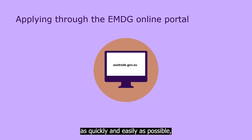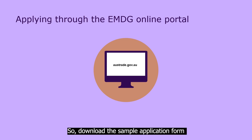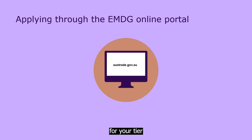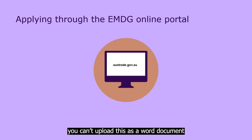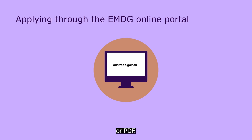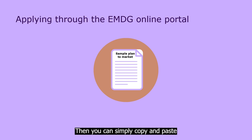To get through your application as quickly and easily as possible, we recommend you prepare your answers in advance. Then you'll be ready to submit when applications open. Download the sample application form for your tier from the Austrade website and answer all the questions. If you've been asked to produce a high-quality plan to market, note that you can't upload this as a Word document or PDF. Use the relevant sample plan to market from our website to get your answers ready, then you can simply copy and paste or type them into the online form.